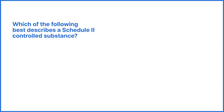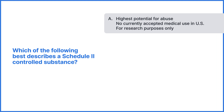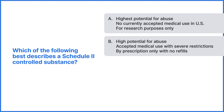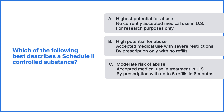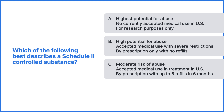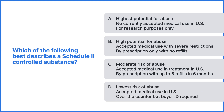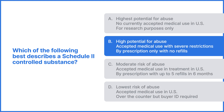Let's try a practice question to check your understanding. Which of the following best describes a Schedule II controlled substance? A: Drugs with the highest potential for abuse, no currently accepted medical use in the United States, and are only used for research purposes. B: Drugs with a high potential for abuse, a currently accepted medical use with severe restrictions, and available by prescription only. D: Drugs with the lowest risk of abuse, a currently accepted medical use, and available over the counter but the buyer must be 18 with an ID. The correct answer is B — drugs with a high potential for abuse, a currently accepted medical use with severe restrictions, and available by prescription.